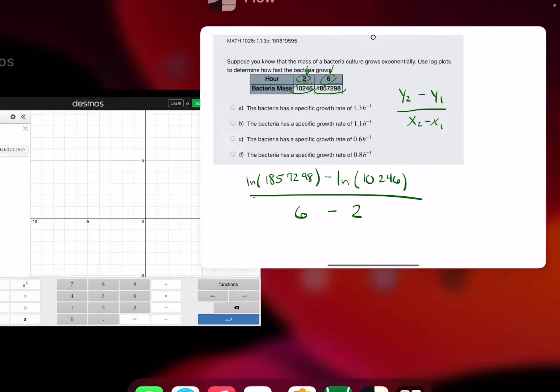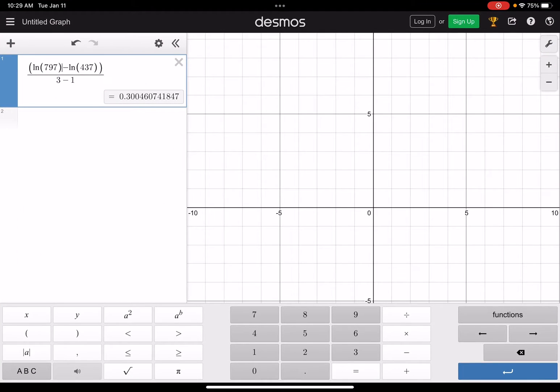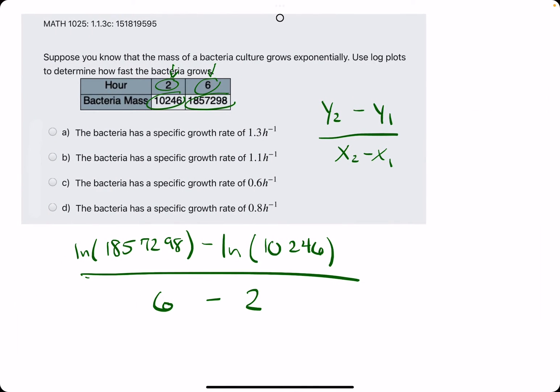and we're putting the ln of the two original bacteria mass values on top and finding the difference between those. And this will give us our answer that we're looking for. So, ln of 1857298, I'm just going to use these, but plug in different values, 1857298.